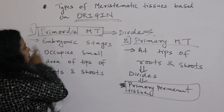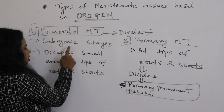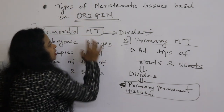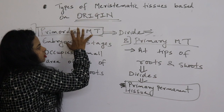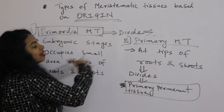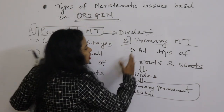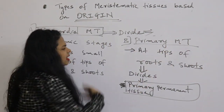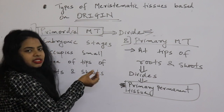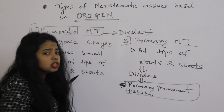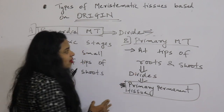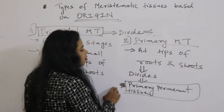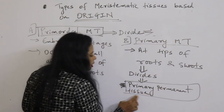So the primordial meristematic tissue is present at embryonic stages and occupies a small area of the tips of roots and shoots. In embryonic stages the cells divide and form the next developed tissue — primary meristematic tissue — which is again present at the major part of the tips of roots and shoots. They will then divide to form primary permanent tissue.